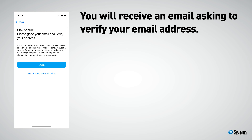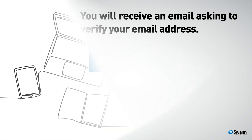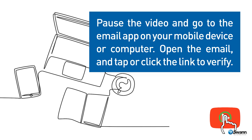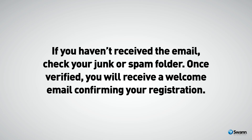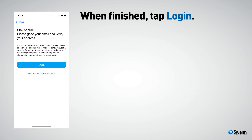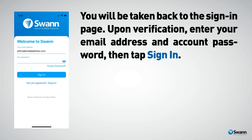You will receive an email asking to verify your email address. Pause the video and go to the email app on your mobile device or computer. Open the email and tap or click the link to verify. If you haven't received the email, check your junk or spam folder. Once verified, you'll receive a welcome email confirming your registration. When finished, tap Login. You'll be taken back to the sign-in page. Enter your email address and account password.